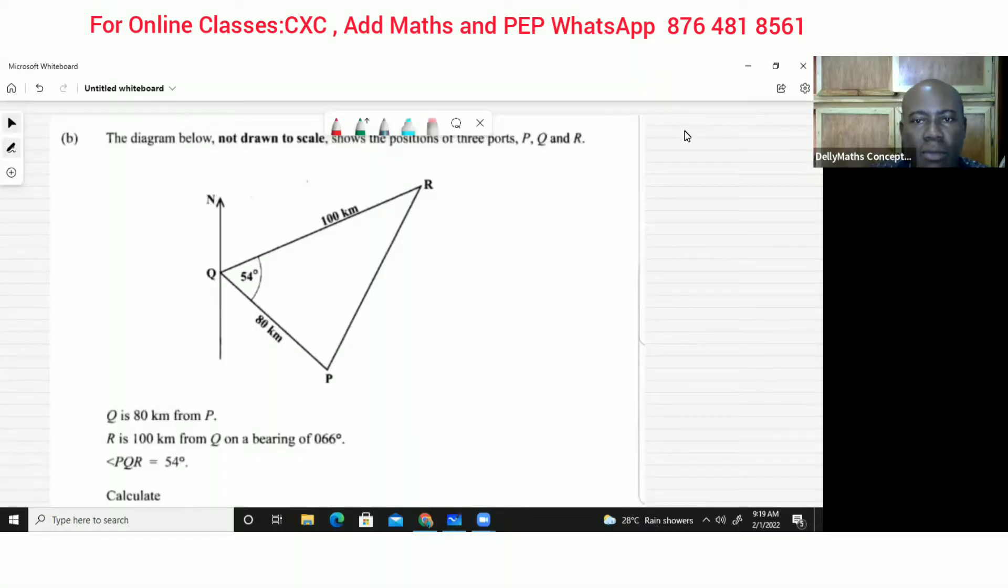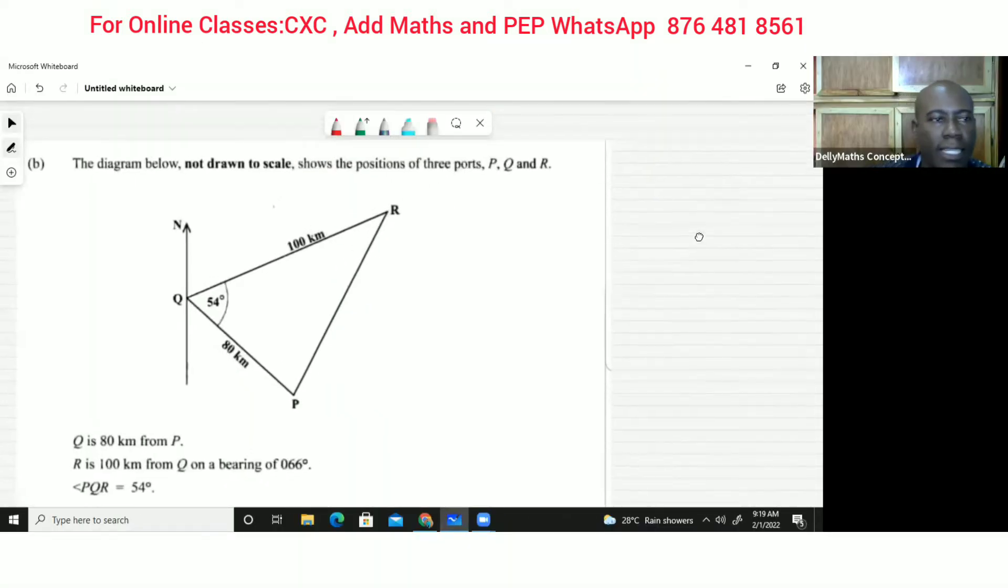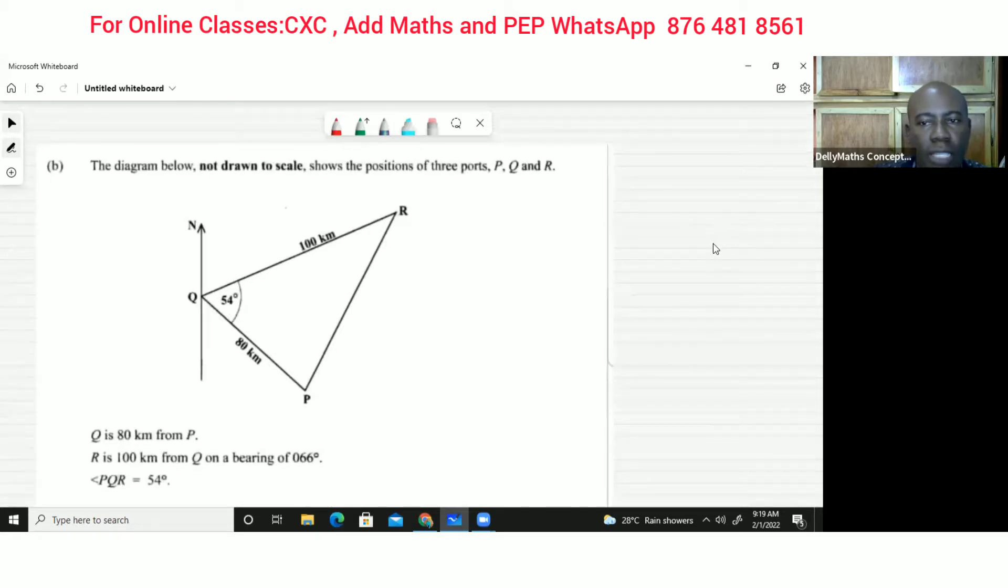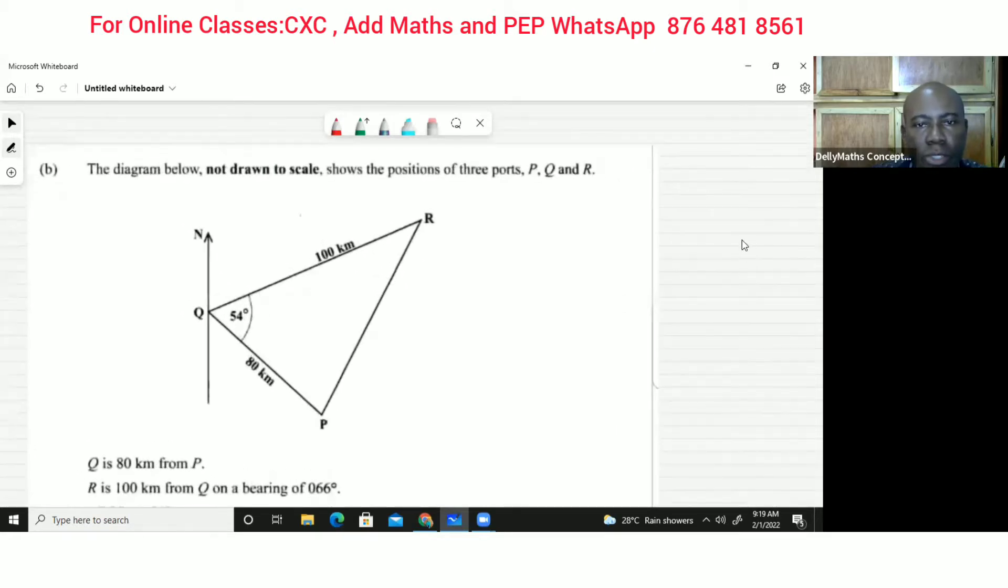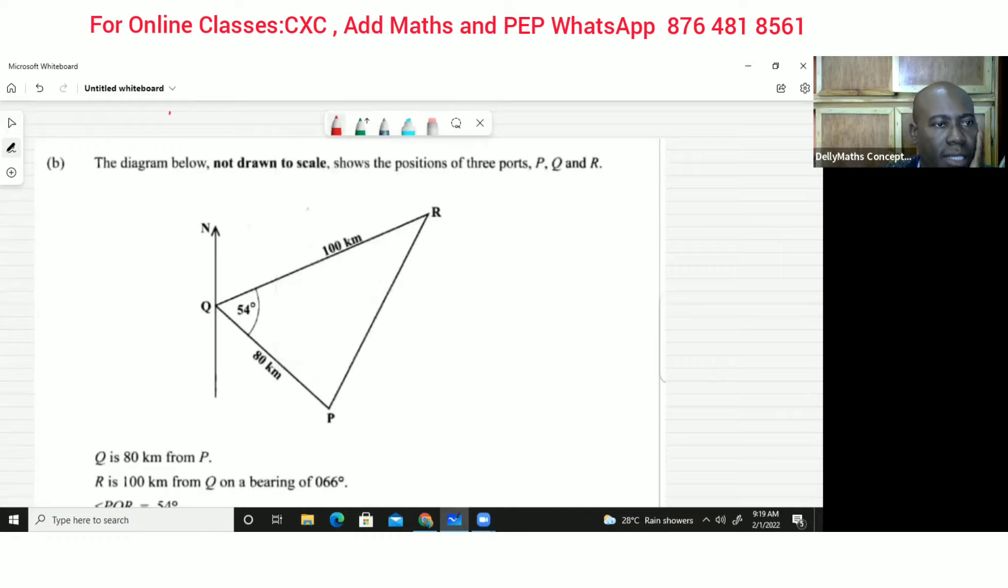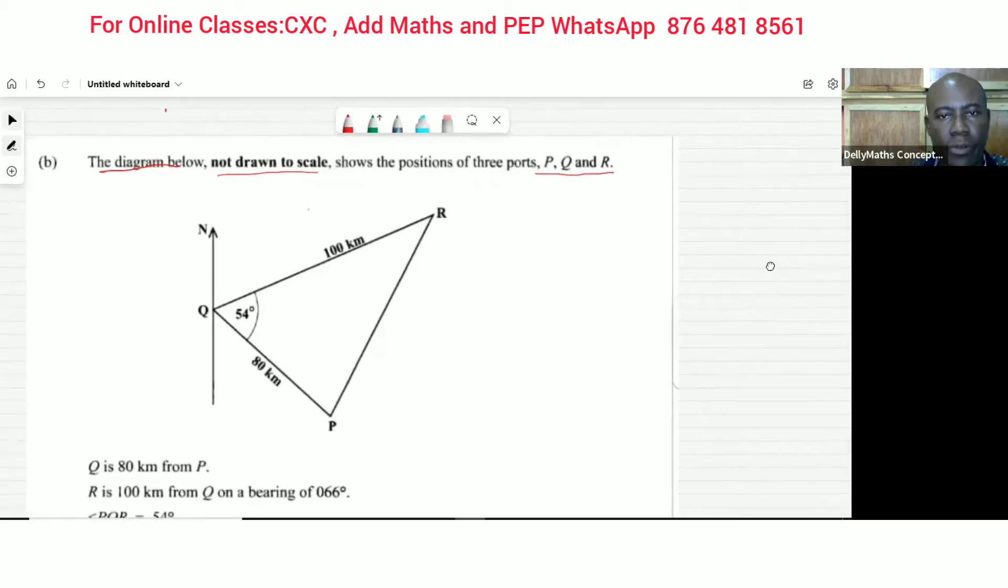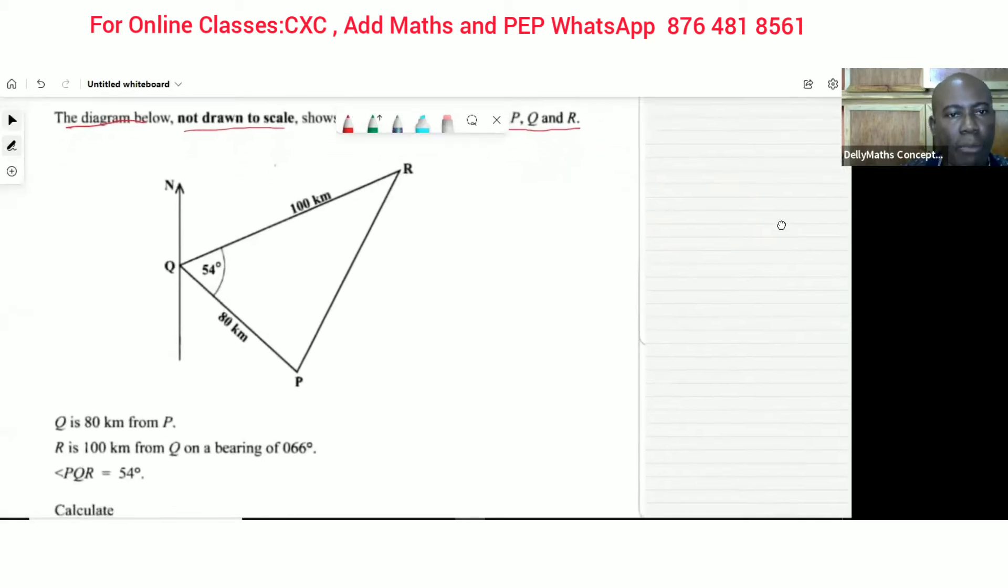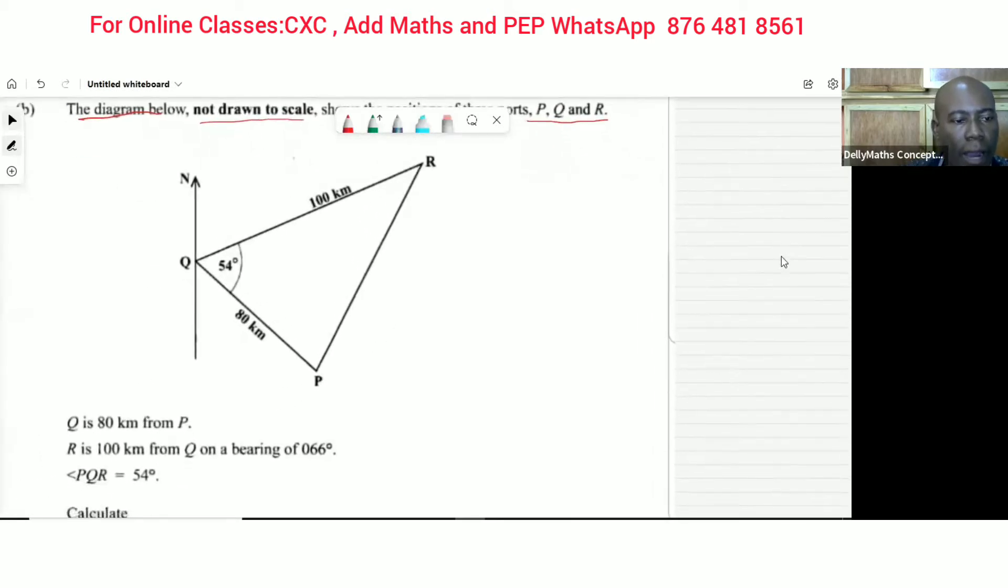Welcome back to Daily Maths Concepts. Today we want to look at a bearings question that came from 2014. The diagram below, not drawn to scale, shows the position of three ports P, Q, and R. We're seeing the three ports in the diagram right there.